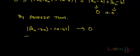That means a_n minus b_n tends towards a minus b. So we have just proved what we required.